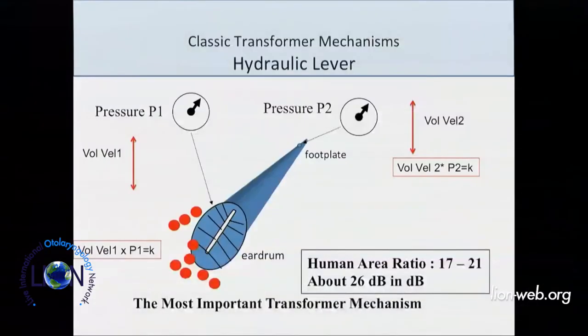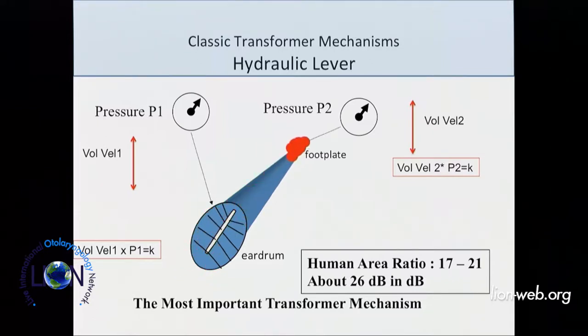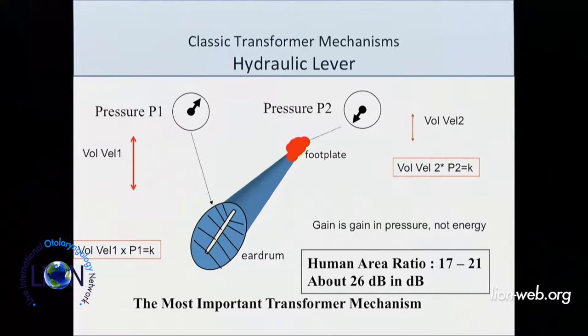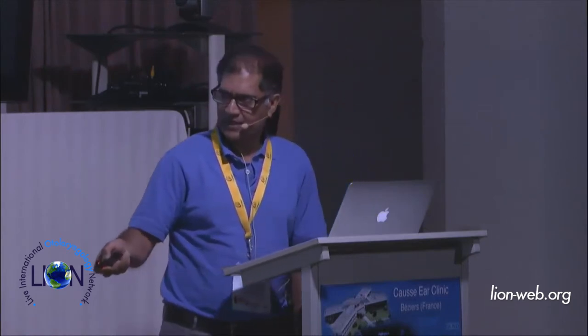In the middle ear, the main mechanism is a hydraulic lever. The main mechanism is the surface area ratio between the tympanic membrane and the footplate. You take this large surface area and focus the pressure down to a smaller surface area. You end up with an increase in pressure but a decrease in volume velocity. There's no gain in energy — it's a pressure gain. Middle ear gain is about 17 to 20 dB, roughly a 26 dB increase.